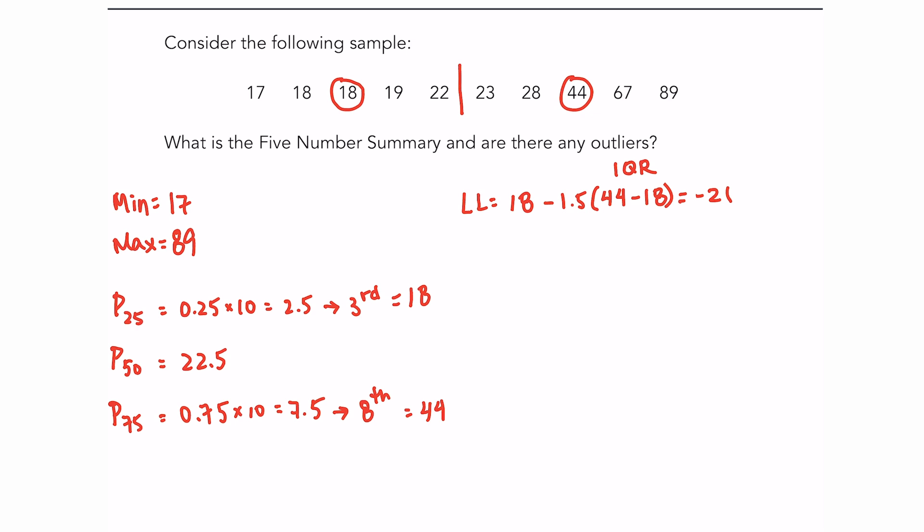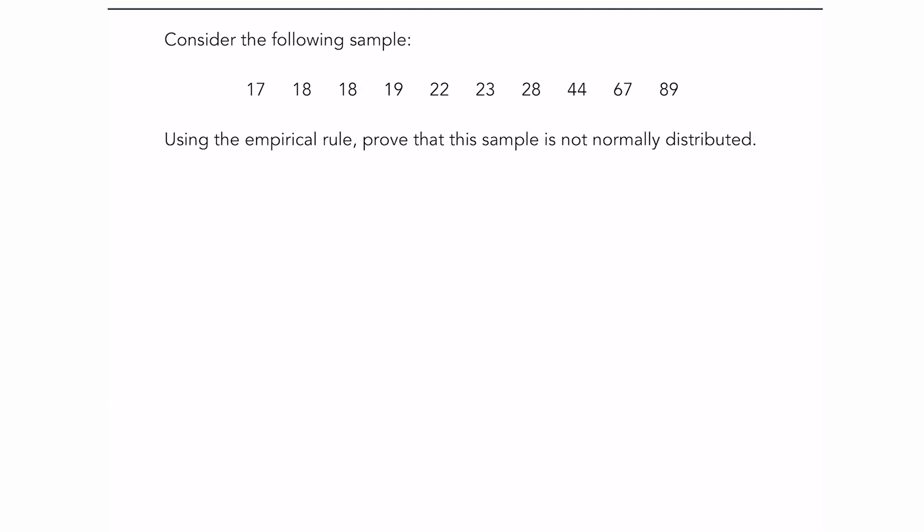For the upper limit I'll take the third quartile, so 44, plus one and a half times the IQR, so 44 minus 18. For this you should get 83, and we could see that the last value, 89, is outside of that limit, which means 89 is an outlier.